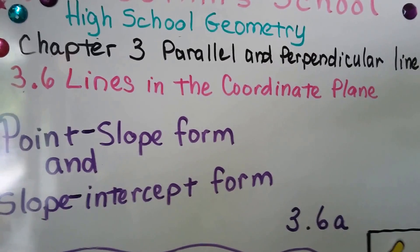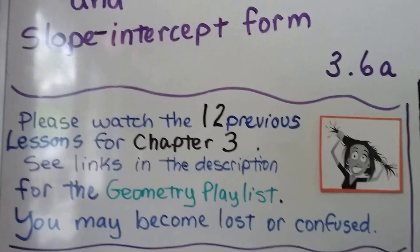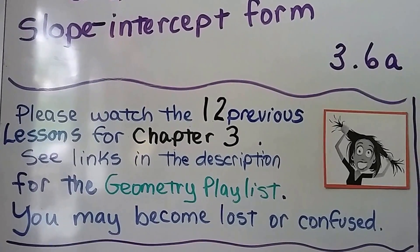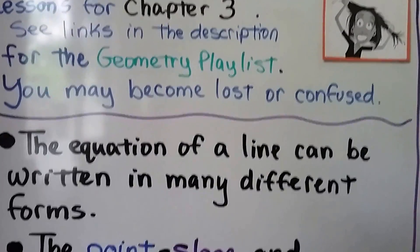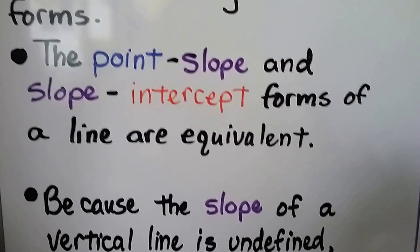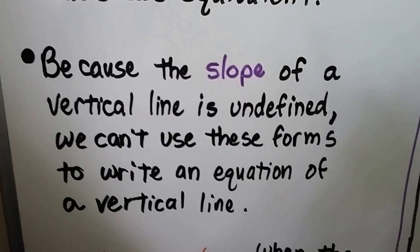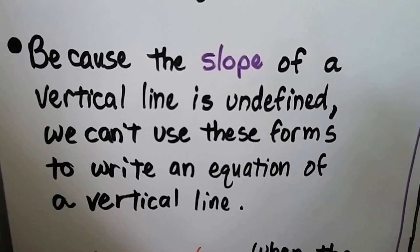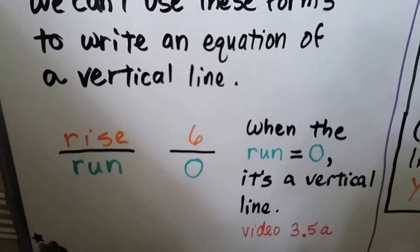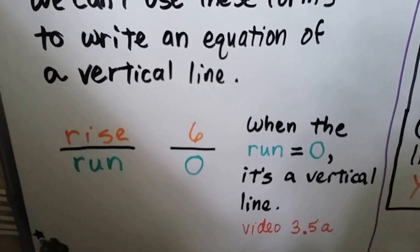Point slope form and slope intercept form — this is lesson 3.6a, and all the previous videos for the geometry playlist are in the description. The equation of a line can be written in many different forms, and the point slope and slope intercept forms of a line are equivalent. Because the slope of a vertical line is undefined, we can't use these forms to write an equation of a vertical line — we have rise over run, and if the run is zero, it's a vertical line. We did that in video 3.5a.